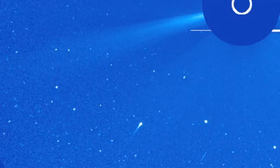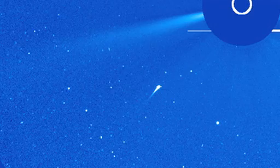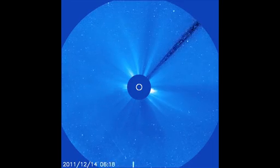With SOHO, we can now see the smaller, fainter comets close to the sun, just long enough to add them to our list of sun-grazers before they vaporize.